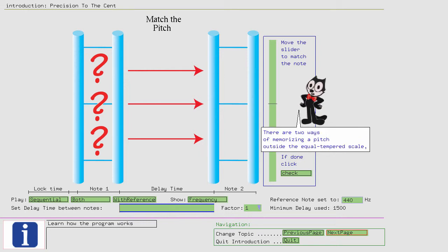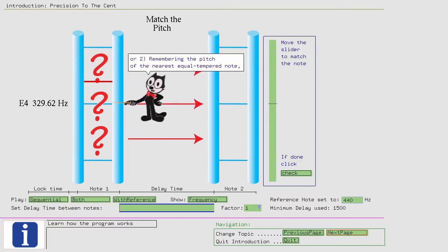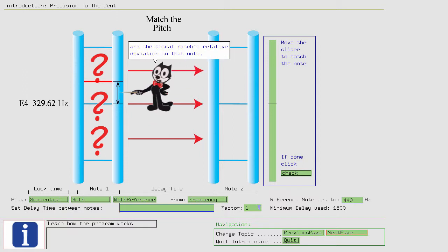There are two ways of memorizing a pitch outside the equal-tempered scale. One, storing the sound securely in your short-term memory. Or two, remembering the pitch of the nearest equal-tempered note and the actual pitch's relative deviation to that note.